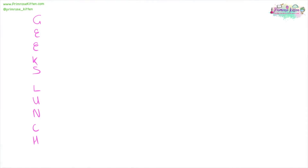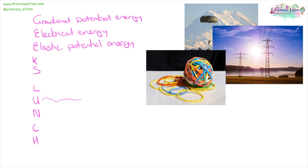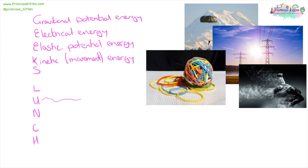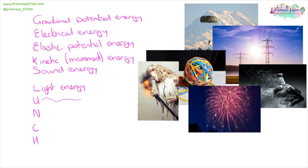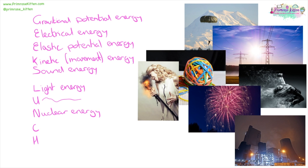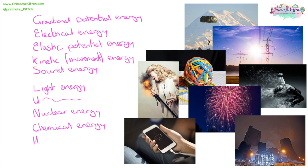The different types of energy can be remembered by using Geek's Lunch — I will admit the U doesn't stand for anything. Gravitational potential energy, electrical energy, elastic potential energy, kinetic energy, sound energy, light energy, nuclear energy, chemical energy (as in batteries or food), and heat or thermal energy.